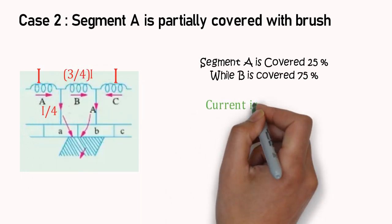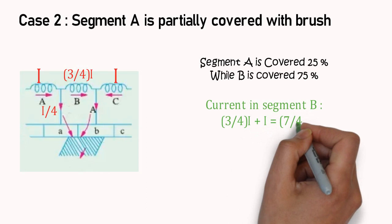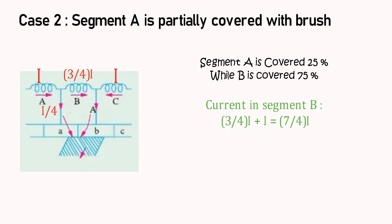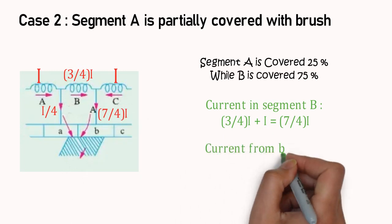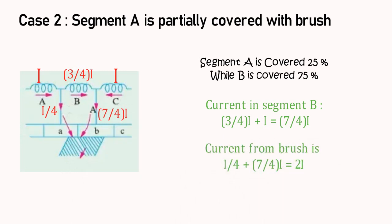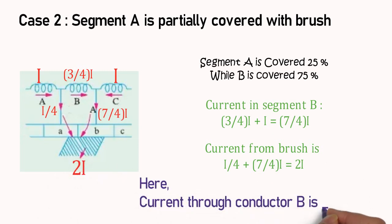Now, current from coil B and coil C both together will pass through segment B, and that is 7/4th of current I. Total 2I current will pass through brush, and 3/4th of I will pass through coil B, which is lower than earlier.